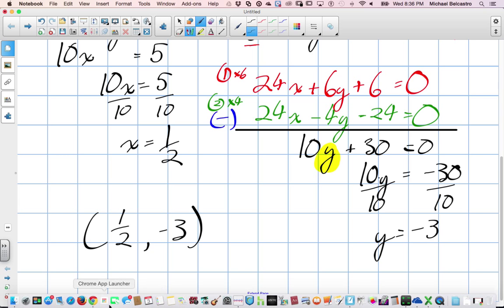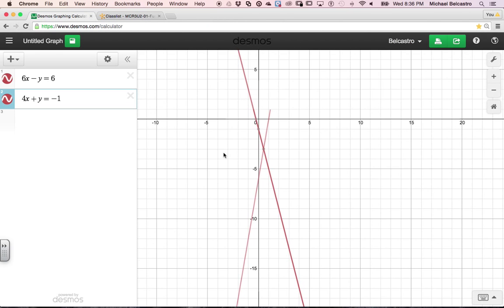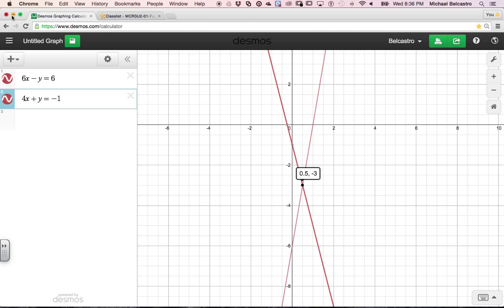So these two lines intersect each other at one-half and negative 3. And I'm sure if we were to graph it nicely, oh, look, we have it right there. 0.5 and negative 3 is exactly where these two lines meet each other.